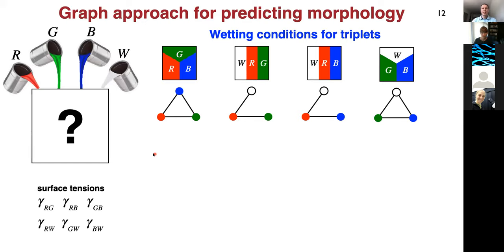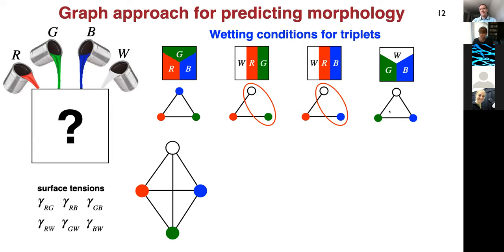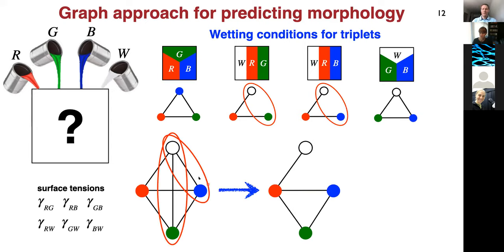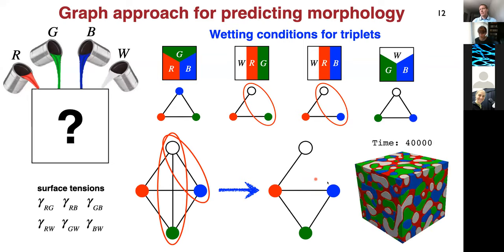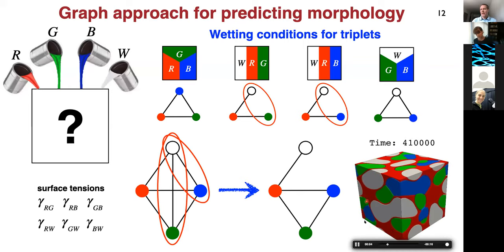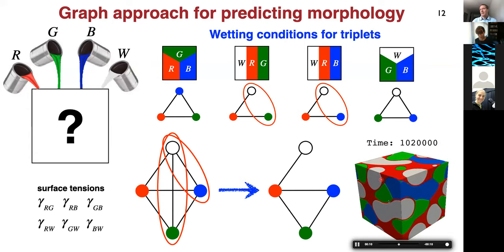The idea is simple: start with a graph with four nodes representing four phases and a fully connected graph. Then iterate over subgraphs and look for any missing edges. Remove those edges from the full graph. After removing white-green and white-blue links, the graph predicts that red, green, and blue should be in contact with each other, but white is only in contact with red — so red effectively separates white from green and blue. Running the simulation, that's indeed what we see: white is encapsulated by red, and then red is in contact with all other phases.